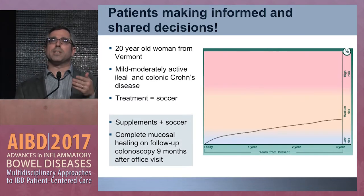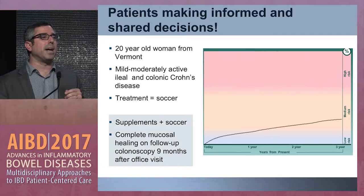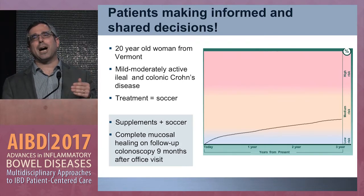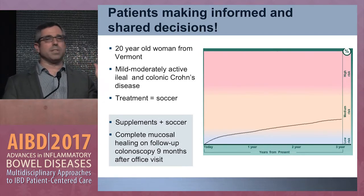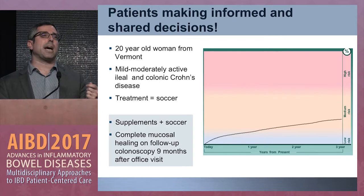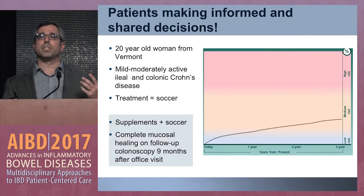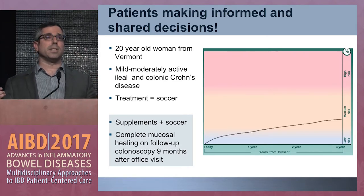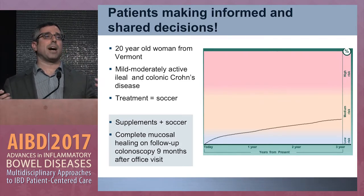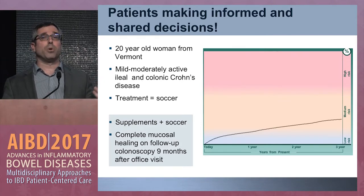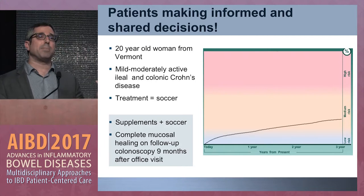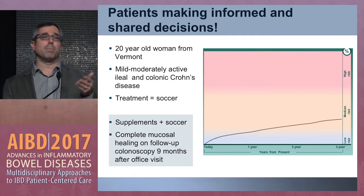Conversely, here's a different patient — one of these amazing young women who went to a university in Vermont, played varsity soccer, held down two jobs, and did not want to be bothered by her new Crohn's disease diagnosis. Her endoscopic findings were less significant — mild to moderately active disease. She came in angry at her local physicians who were forcing her onto combination therapy for new small bowel Crohn's disease. She wanted to treat her disease naturally, exercise more, play more soccer, and knew that would make her feel better. We put her through the model and it looked very different from the first patient.